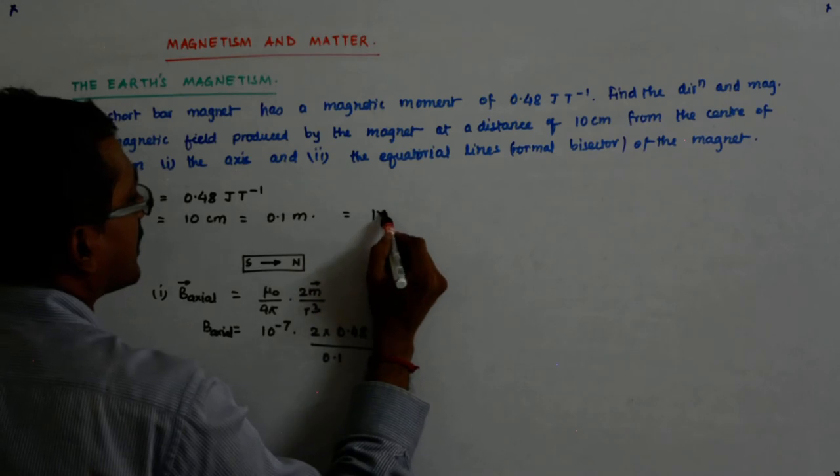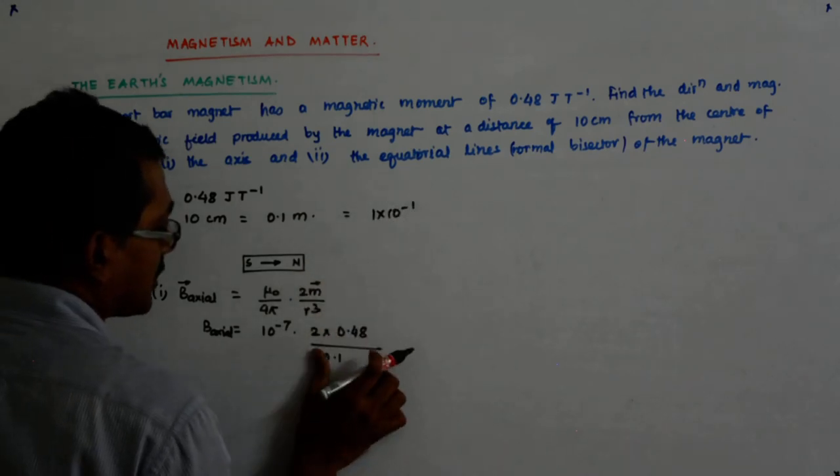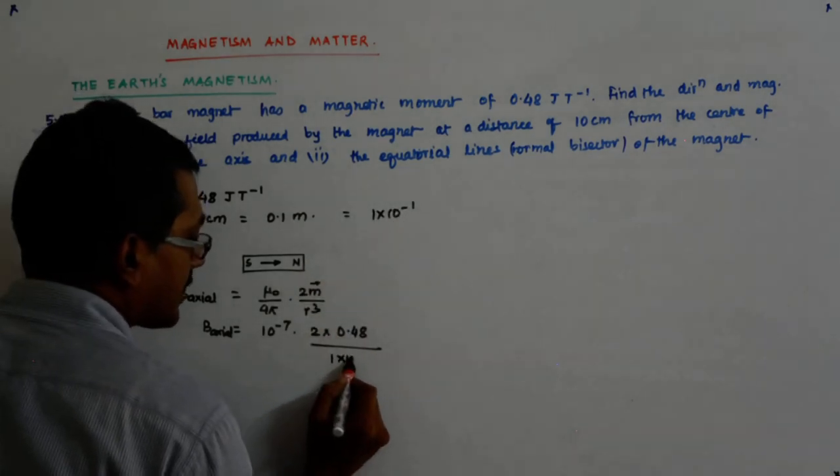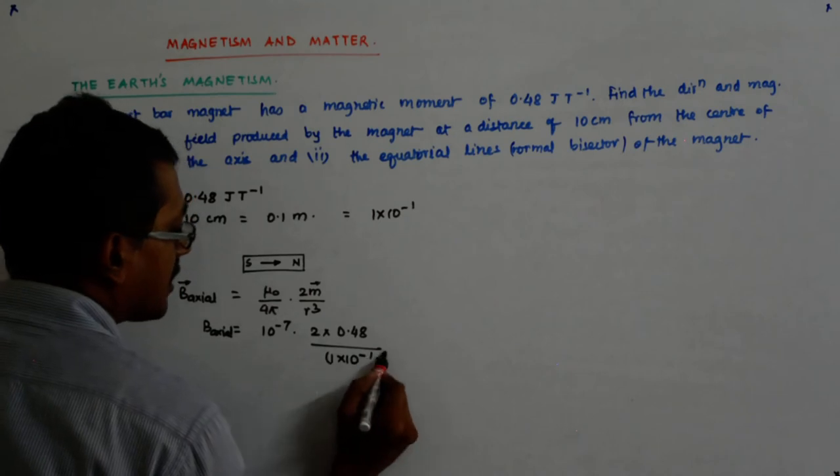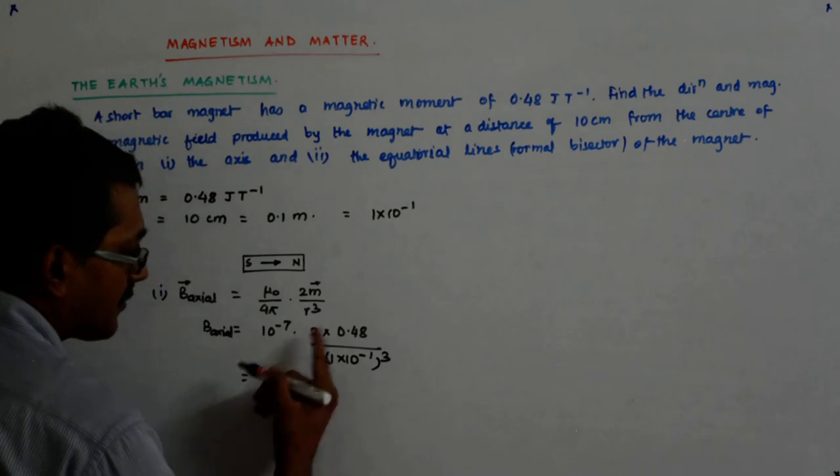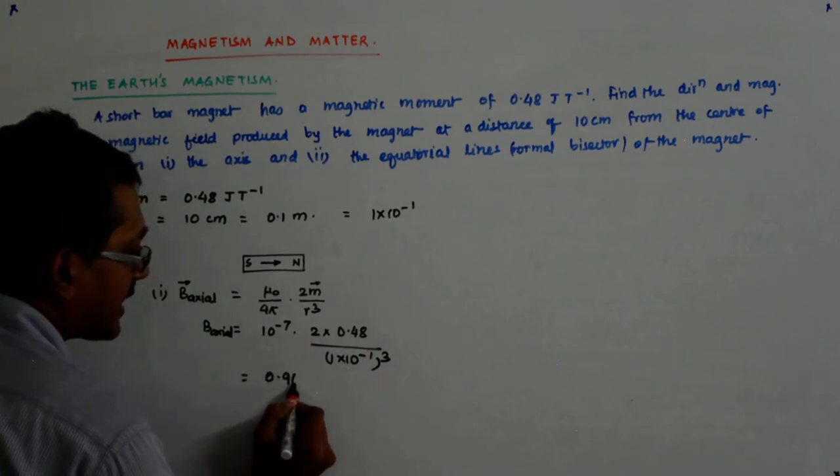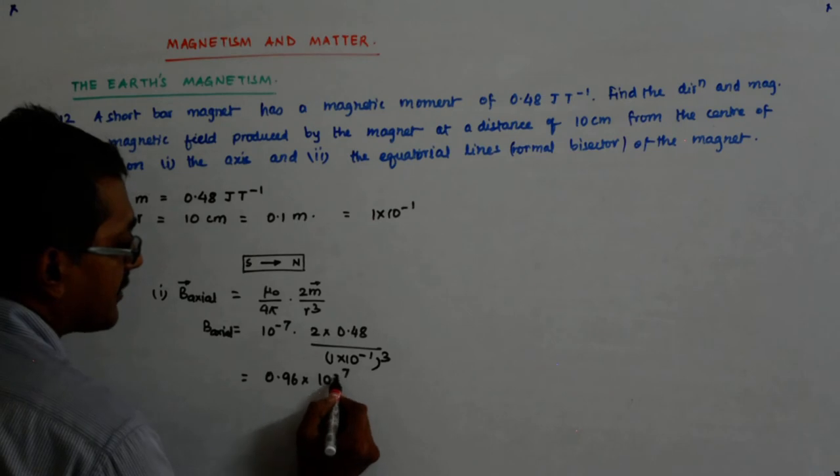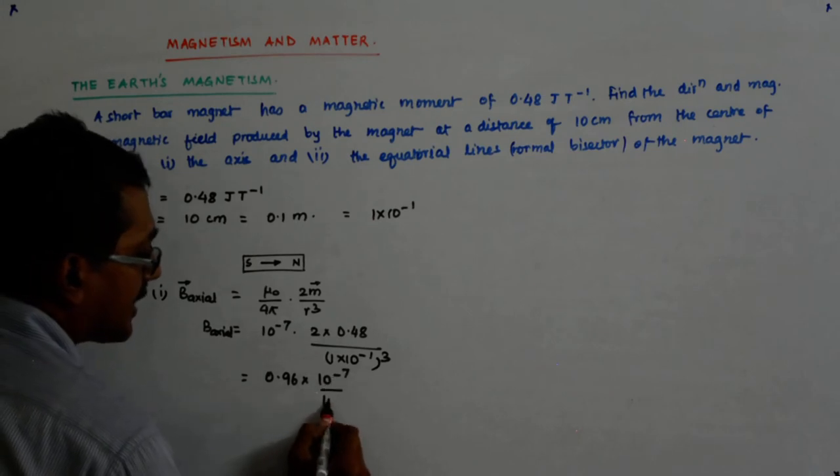This is actually 1 into 10 to the power minus 1. So this becomes 1 into 10 to the power minus 1 to the power 3.